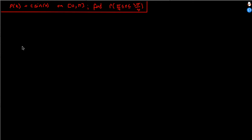We're given that the probability density function is c times sine of x on this interval, and we are asked to find the probability that x takes a value between pi over 4 and 3 pi over 4.